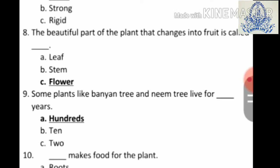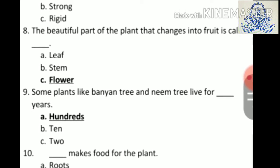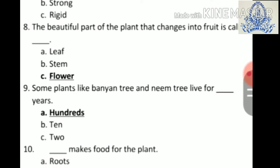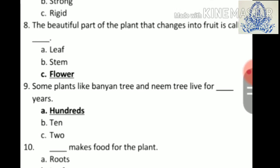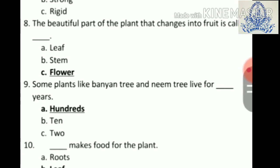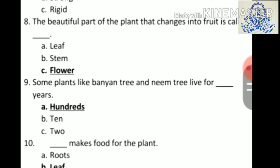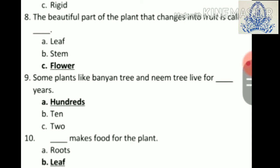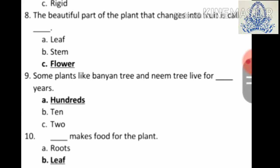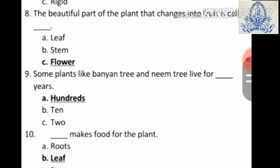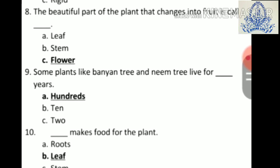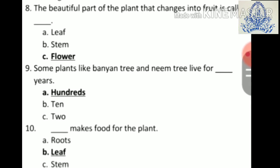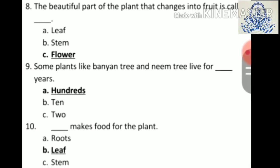Ninth: some plants like banyan tree and neem tree live for dash years — a) hundreds, b) ten, c) two. Answer is a) hundreds. Tenth: dash makes food for the plant — a) roots, b) leaf, c) stem. Answer is b) leaf.